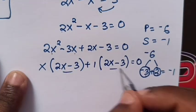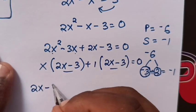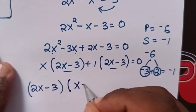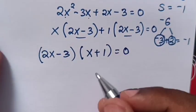Now 2x minus 3 is common, so 2x minus 3 bracket times x plus 1 equals 0.